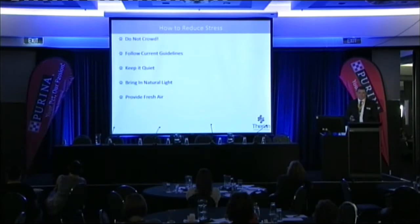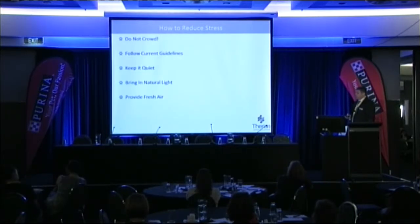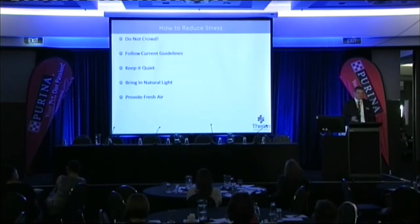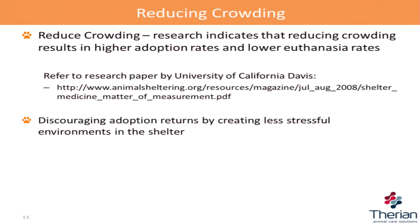Follow current guidelines — every state in Australia has guidelines, some very poor, others very good. Keep the facility quiet as much as possible, bring in natural light — it's good for us as humans and very good for animals — and provide good fresh air throughout the facility at all times. There was a paper done by UC Davis, University of California, around crowding. I recommend people looking to do facility design for their animal shelter have a look at it — it covers a lot around crowding, stress, and other issues.